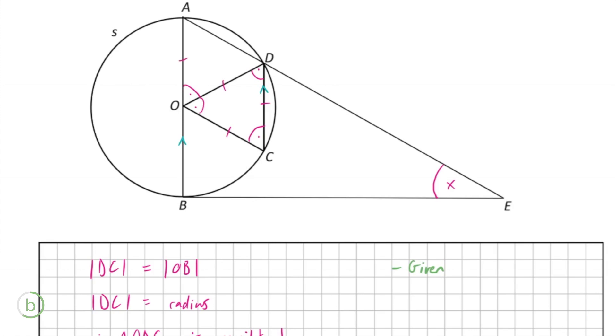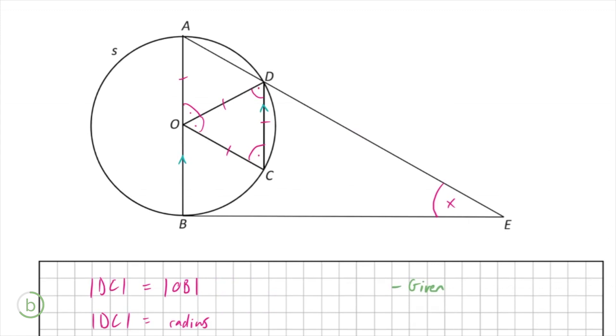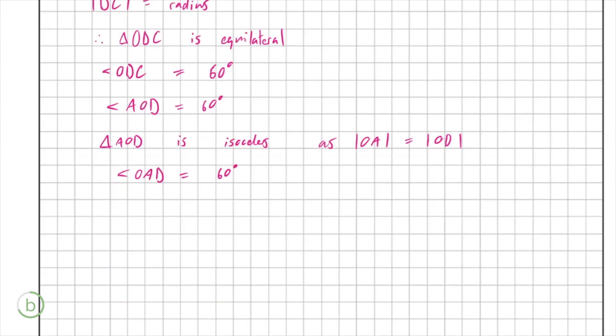Although not necessarily equilateral, I don't think. So we have this isosceles triangle now, OAD. And as you might have guessed, this angle here is also 60. So it actually looks like this triangle is also equilateral after all.